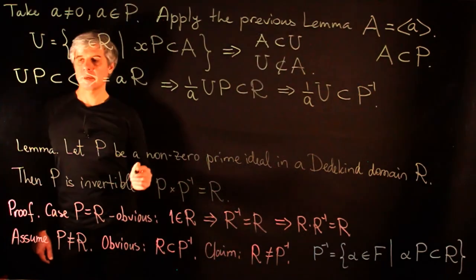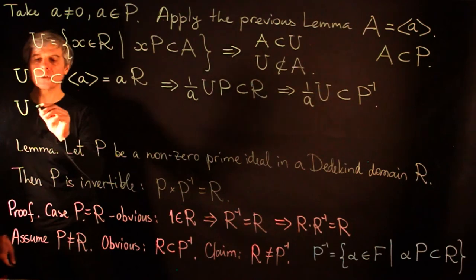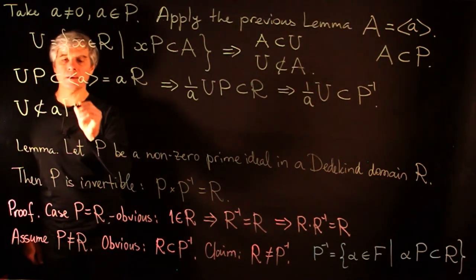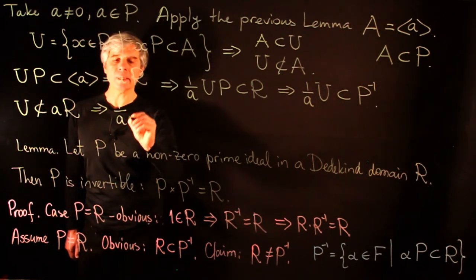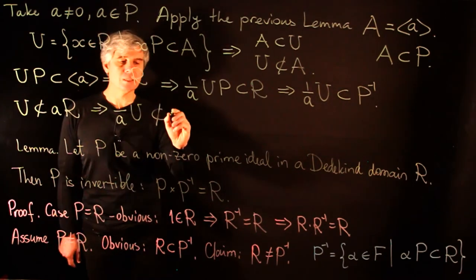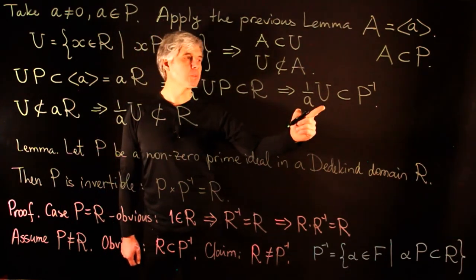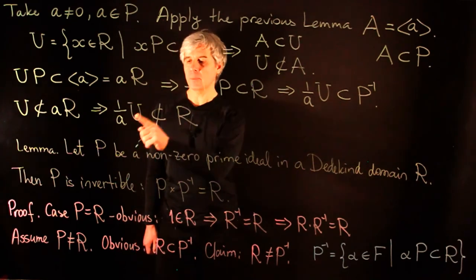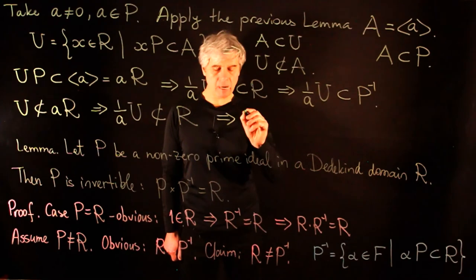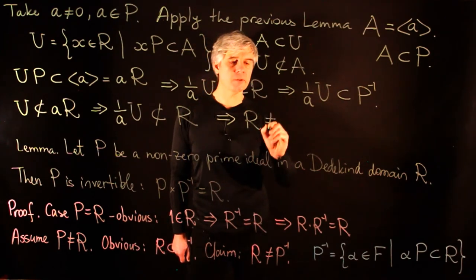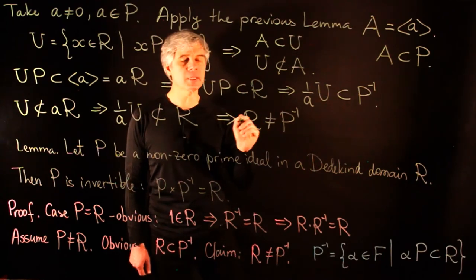By the claim of the previous lemma, U ⊄ (a), which means (1/a)·U ⊄ R. So we have (1/a)·U ⊆ P⁻¹ but (1/a)·U ⊄ R. This tells us that R ≠ P⁻¹, and thus P⁻¹ is strictly greater than R.